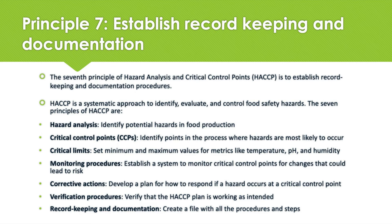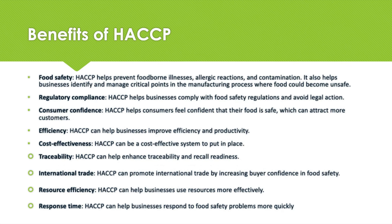Principle seven establishes documentation regarding all procedures and records appropriate to these principles and their application. There are a number of advantages to implementing the HACCP program: it is the most effective way to ensure food safety, reduces or eliminates the risk of producing unsafe products, increases customer satisfaction, targets critical areas of processing, is cost-effective, integrates well with existing quality assurance programs, and enhances the food inspection process. For instance, the HACCP team has planned verification procedures, monitoring validation records and daily production records.